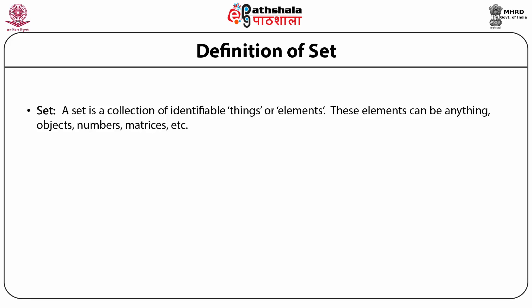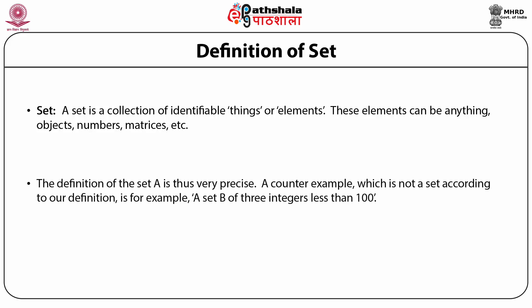Thus, if we define a set A to be the set of all positive integers less than 100, it is clear that the number 7 belongs to the set A, but the number 105 does not belong to A, and likewise the rational number 3/5 does not belong to the set. The definition of the set is thus very precise.